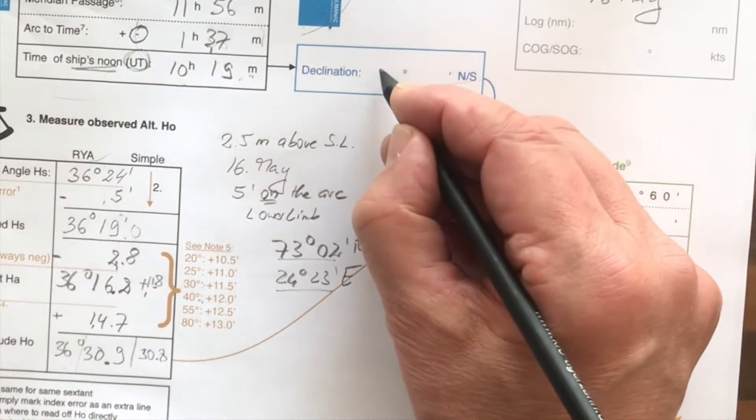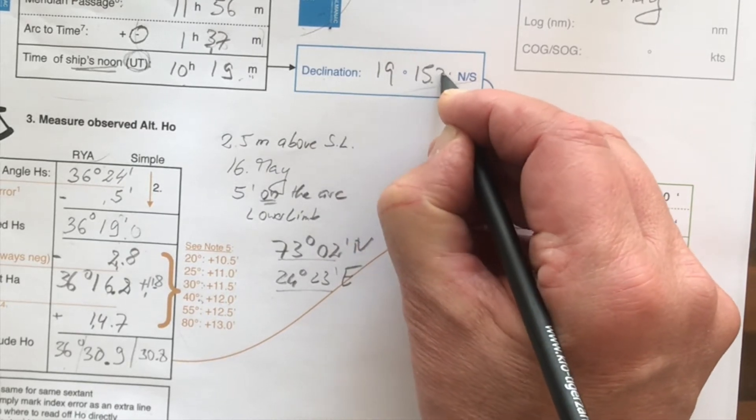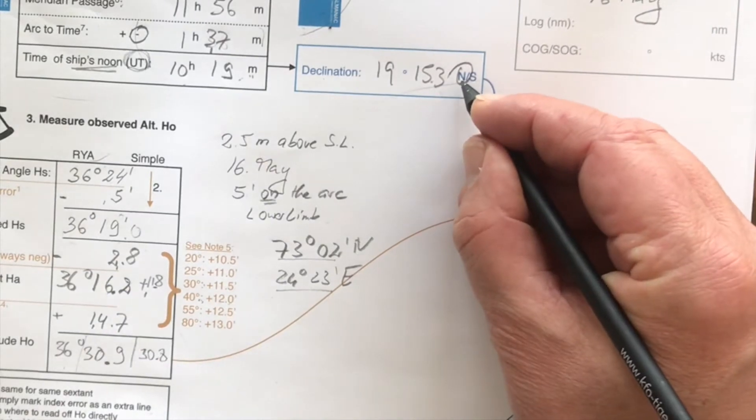So let's call it 15.2 or just 15. Let's say 15.3. All right here, north, 19 degrees, 15.3. So that's the northern declination.